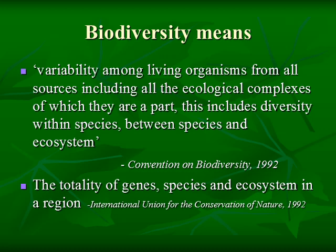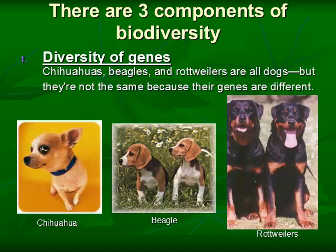This includes diversity within species, between species, and ecosystem. In the same year, the International Union for the Conservation of Nature defined biodiversity as the totality of genes, species, and ecosystems in a region. With this definition, we can say that there are three components of biodiversity.